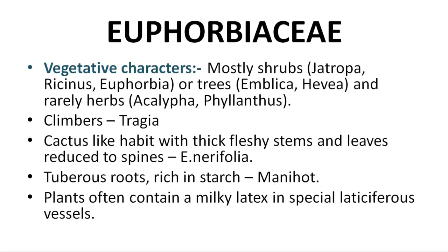Vegetative characters: plants are mostly shrubs — examples include Jatropha, Ricinus, and Euphorbia. Trees include Emblica and Hevea. Rubber Tree is an example of trees. Herbs include Acalypha and Phyllanthus. Climbers are Tragia. Cactus-like habit is seen in Euphorbia neriifolia.